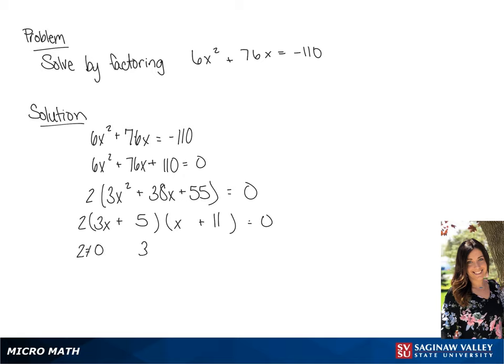Now we're going to set each term equal to 0. So we see that 2 does not equal 0. And then we have 3x plus 5 equals 0 or x plus 11 is equal to 0. So our final answer is x equals negative 5 over 3 or x equals negative 11.